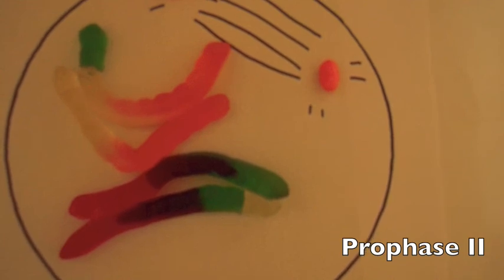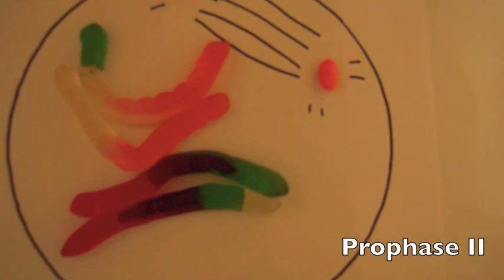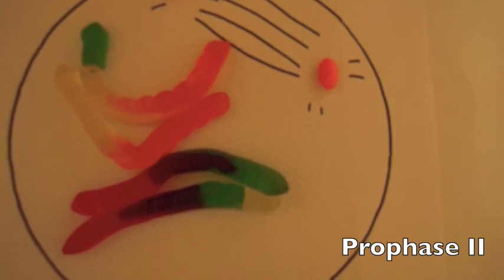In prophase II, a spindle apparatus forms in both daughter cells, and each of the chromosomes are still composed of two chromatids.